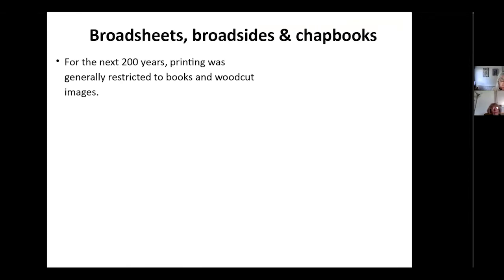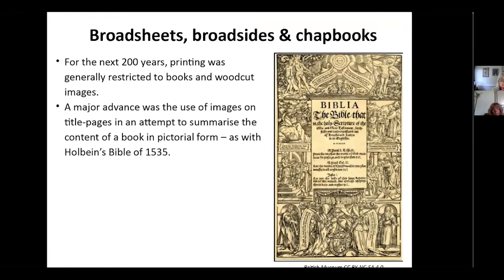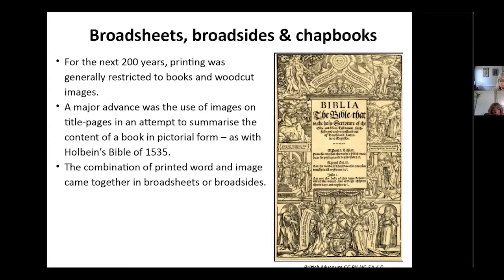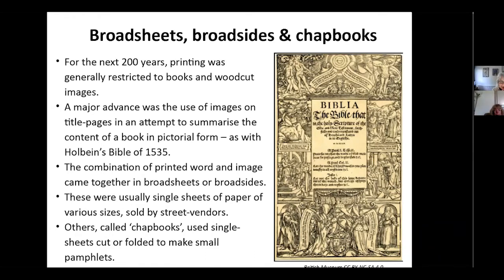For the next 200 years or so, printing was generally restricted to books and woodcut images. A major advance was the use of images on title pages, used to try and summarise the content of the book in pictorial form. This is Holbein's Bible of 1535 with rather beautiful woodcut drawings. The combination of printed word and image came together in things called broadsheets or broadsides — usually just single sheets of paper, various sizes, sold by street vendors quite cheaply. There was another branch known as chapbooks, which used single sheets folded and cut to make small booklets or pamphlets.